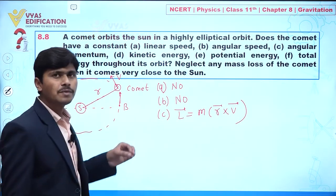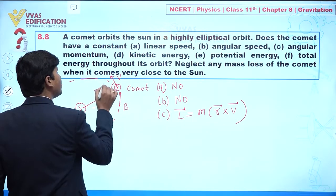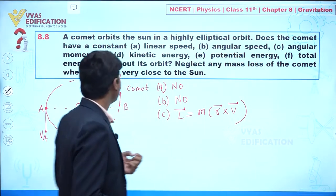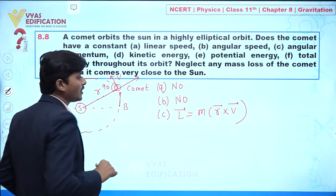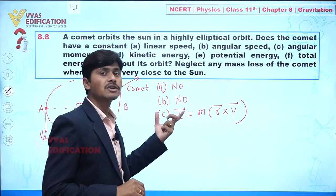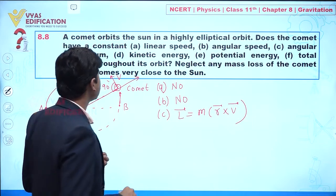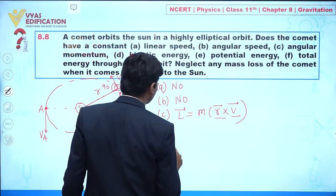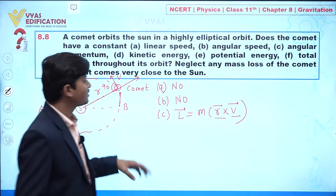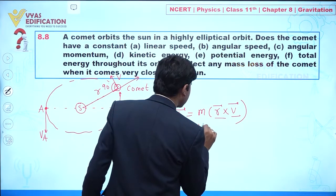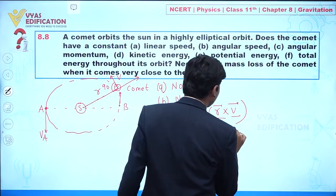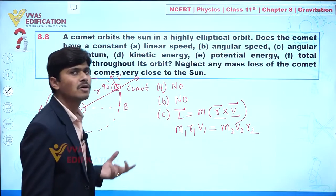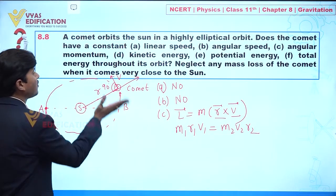Angular momentum is given by L = m(r × v). At every position, the angle between the r and v vectors gives the cross product. This physical quantity always remains conserved. We can write: m₁v₁r₁ = m₂v₂r₂. So magnitude-wise, angular momentum remains the same throughout the orbit.